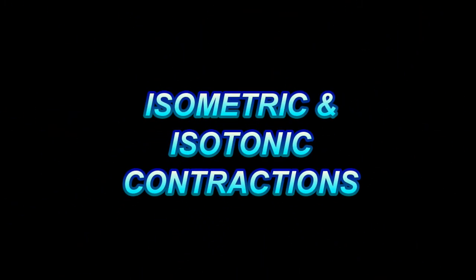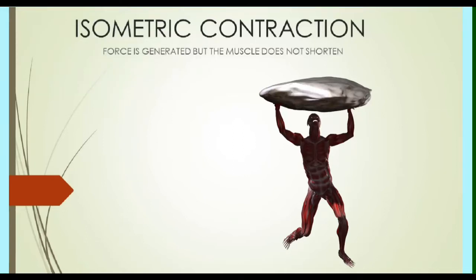When myosin heads pull on the active sites of actin molecules, this creates tension. This does not necessarily cause the muscle to shorten, because if a muscle is applying tension to a great load, then the muscle will exert force but will stay the same length. This would be known as an isometric contraction, isometric meaning same length.